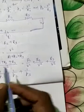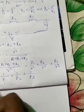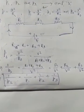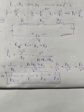Thus, in series combination of resistance, the reciprocal of net power is equal to the algebraic sum of the reciprocals of the individual powers consumed by each bulb.